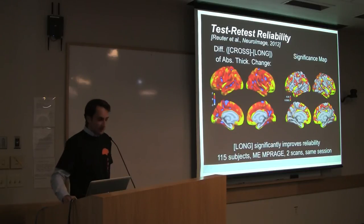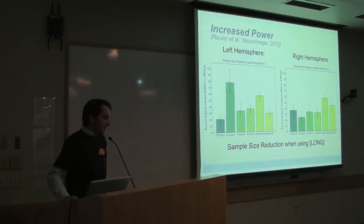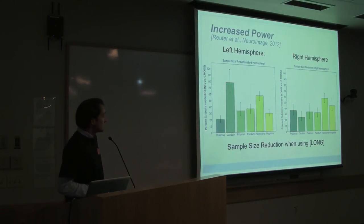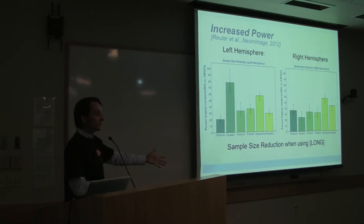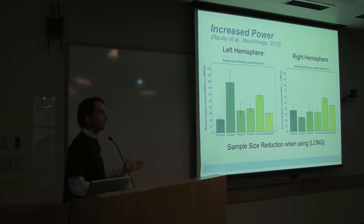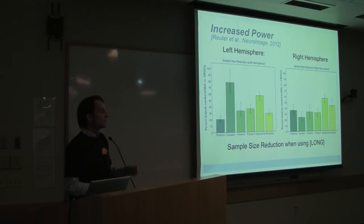This leads to an increase in statistical power. If you have a study and are interested in some effect, you can reduce the number of subjects by approximately 50% to find the same effect when using longitudinal processing instead of running images independently through FreeSurfer. That's the real reason we do all this — to be more accurate and either use fewer subjects or detect smaller changes.